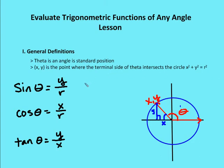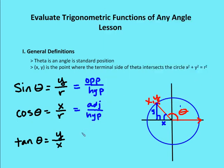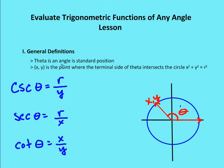For sine, we can now rewrite the function as y over r, where it was previously opposite over hypotenuse. We're just modifying it based on the organization of the circle and the way that triangles are laid out as you rotate the terminal side around the circle. Cosine will be x over r, and tangent will be opposite over adjacent, or y over x. We can extend this to the other three trig functions: cosecant of theta is r over y, secant of theta is r over x, and cotangent is x over y.